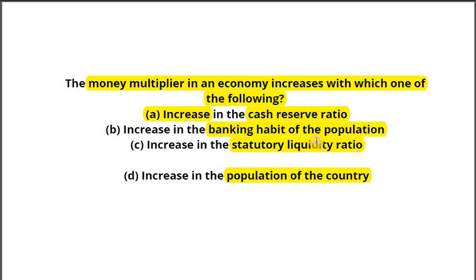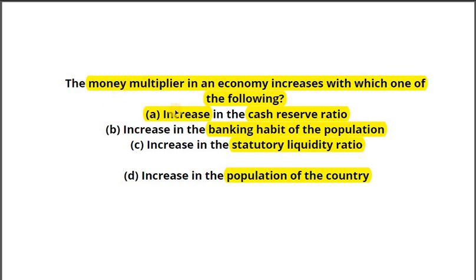Let's put option B on hold for now. Option C is increase in the statutory liquidity ratio — SLR is similar to CRR in concept, so increasing SLR would not increase the money multiplier; it would decrease it. The last option is increase in the population of the country — there is no direct linkage between population and money multiplier. Now look at option B: increase in the banking habit of the population. More and more people going to the bank and saving money means the amount available for lending could increase from 100 to 200 rupees — money is getting multiplied.